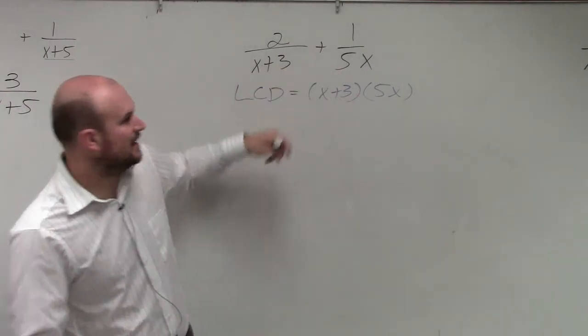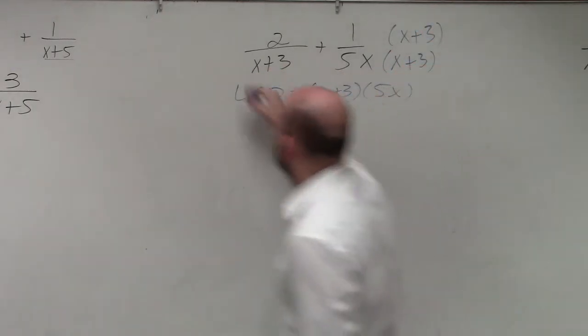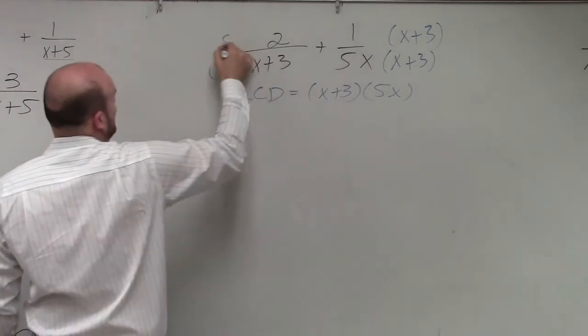So now, to get to LCD, I need to multiply this by x plus 3 over x plus 3. And here, 5x times 5x.